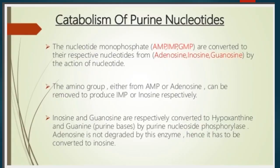The nucleotide monophosphates like AMP, IMP, and GMP are converted to their respective nucleosides — adenosine, inosine, and guanosine — by the action of nucleotidase. The amino group either from AMP or adenosine can be removed to produce IMP or inosine respectively. Inosine and guanosine are respectively converted to hypoxanthine and guanine by purine nucleoside phosphorylase. Adenosine is not degraded by this enzyme and must first be converted to inosine.